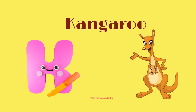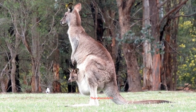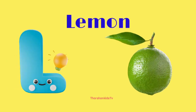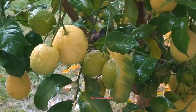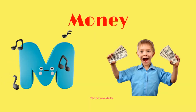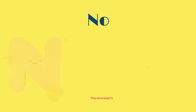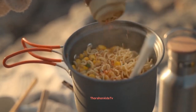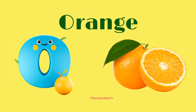K for kangaroo. L for lion. M for money. N for noodles. O for orange.